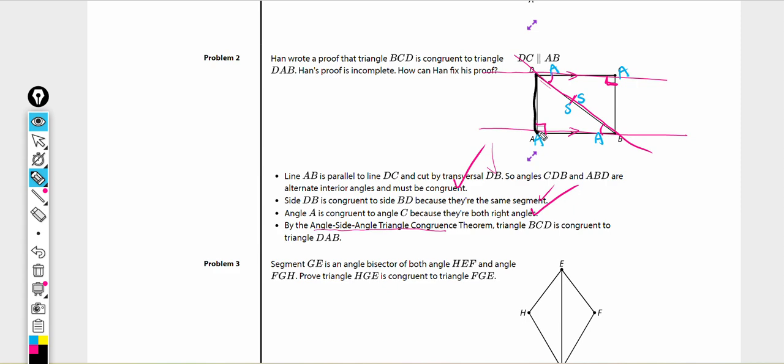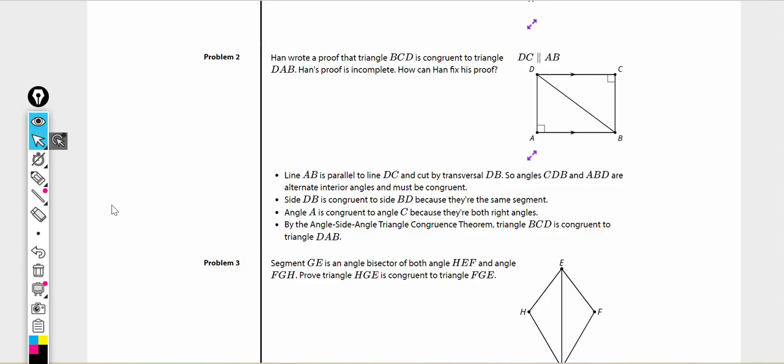By the angle-side-angle triangle congruence theorem, triangle BCD is congruent to triangle DAB. Let's check it out. We got these guys that are congruent because they're right angles. We have these guys that are congruent because of our alternate interior angles. And we have a side that is congruent because of our shared side. Let's look at one triangle. I see an angle, I see an angle, and I see a side. Order matters. He said angle-side-angle. To fix his proof, he would have needed to say angle-angle-side, because the side is not in between the two angles.